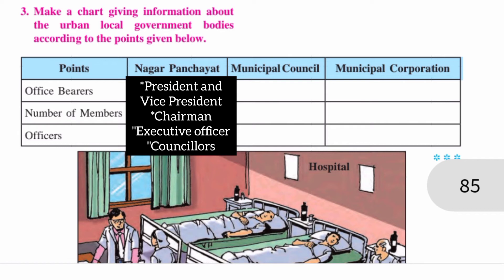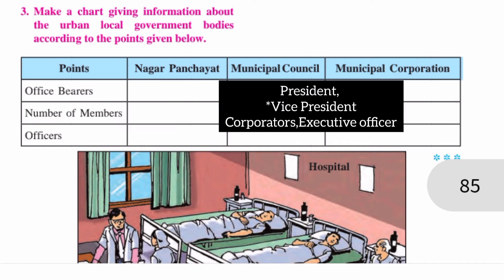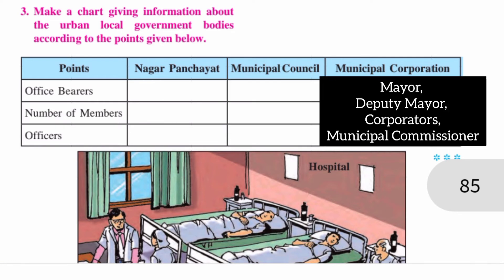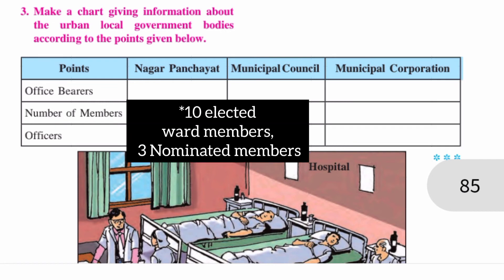For Municipal Council, the office bearers are: President, Vice President, Corporators, and Executive Officer. For Municipal Corporation, the office bearers are: Mayor, Deputy Mayor, Corporators, and Municipal Commissioner.